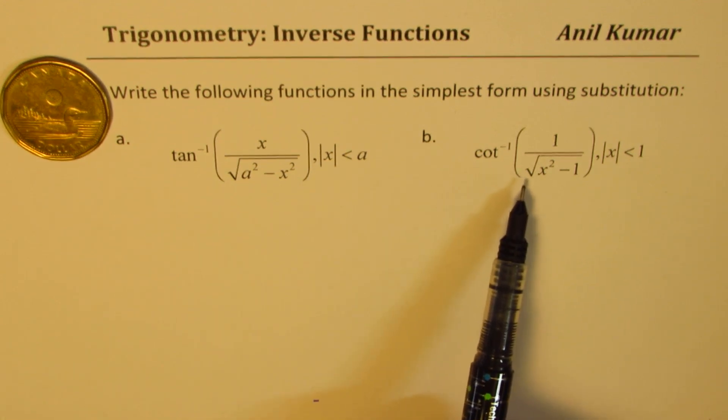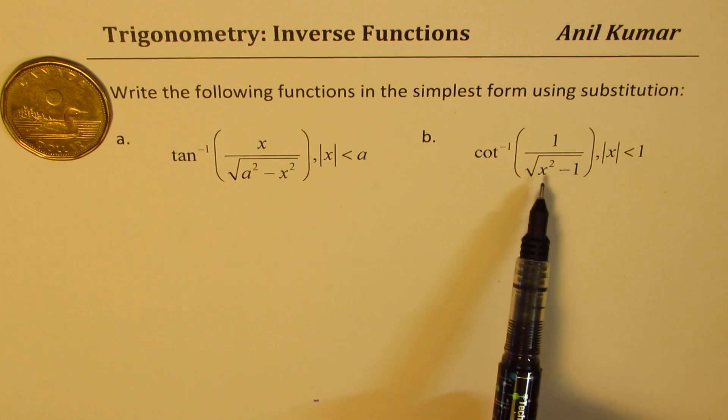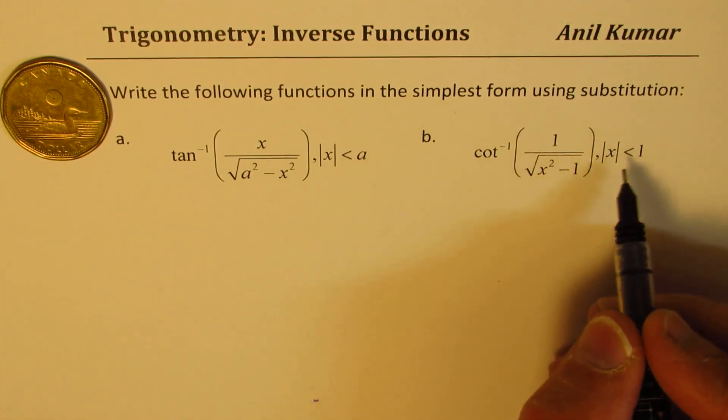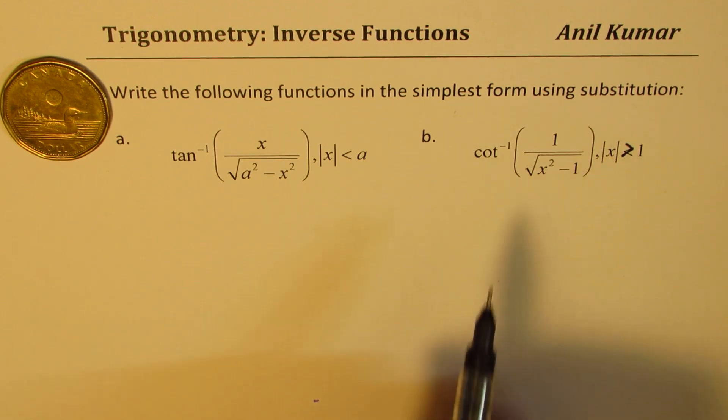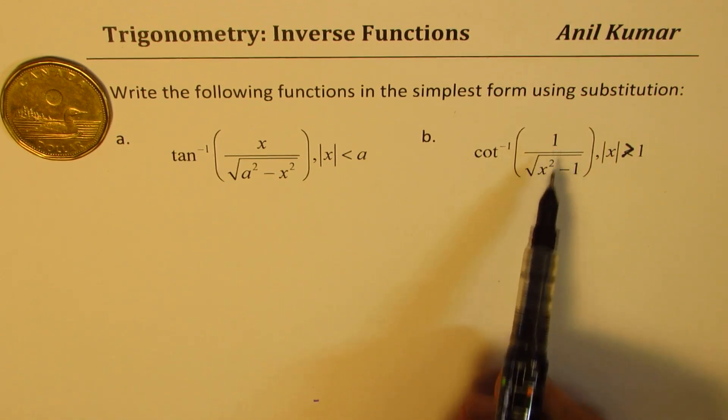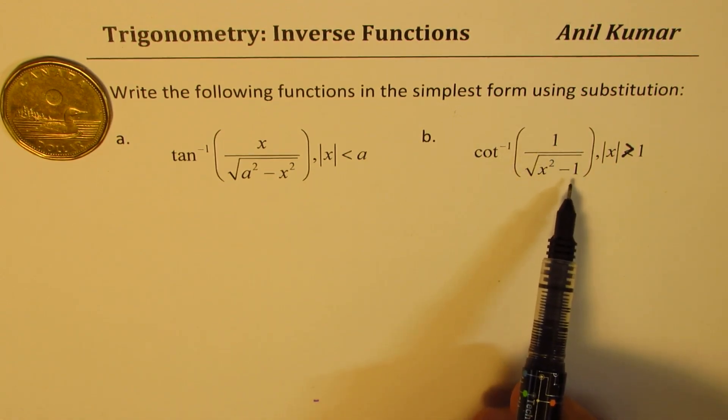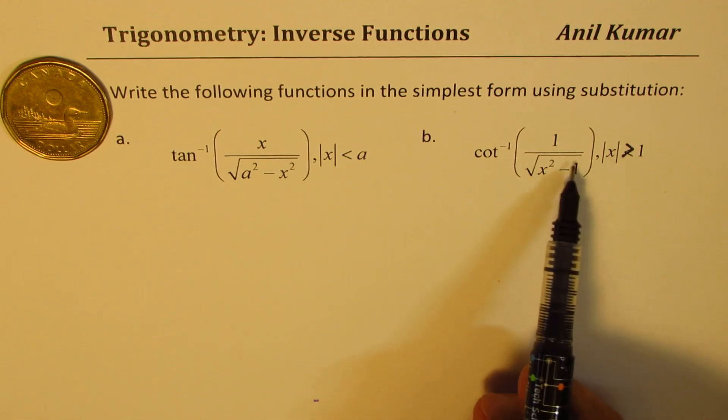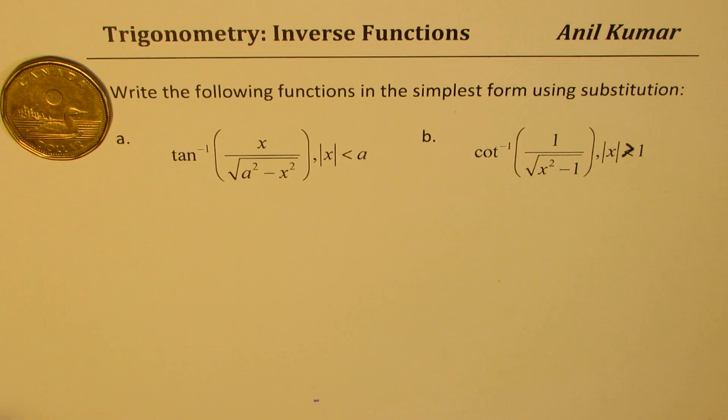Second one is seemingly similar, which says it should be greater than 1. Cot inverse 1 over x square minus 1, where absolute value of x should be greater than 1. Since you know within the square root, it has to be a positive number. So that's the whole idea. Now, let's see what kind of substitutions can we make.